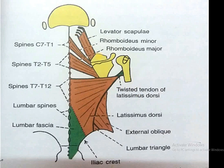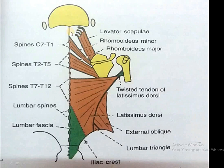Rhomboidus minor arises from the ligamentum nuchae and C7 to T1 spines, and inserts at the root of the spine of the scapula. Rhomboidus major arises from T2 to T5 spines and inserts on the medial border of the scapula below the spine. Levator scapulae arises from the transverse processes of C1, C2, C3, and C4 and inserts on the superior angle and upper part of the medial border of the scapula at and above the root of the spine.